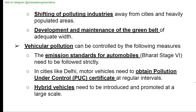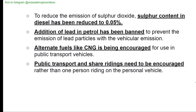Vehicular pollution can be controlled by: strictly following emission standards for automobiles (Bharat Stage 6); motor vehicles obtaining Pollution Under Control (PUC) certificates at regular intervals; introducing hybrid vehicles; reducing sulfur content in diesel to 0.05%; banning the addition of lead in petrol; and encouraging alternate fuels like CNG for public transport vehicles.